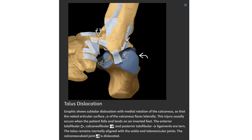The anterior talofibular, calcaneofibular, and posterior talofibular ligaments are torn. The talus remains normally aligned with the ankle and talonavicular joints, with the anterior talus intact.